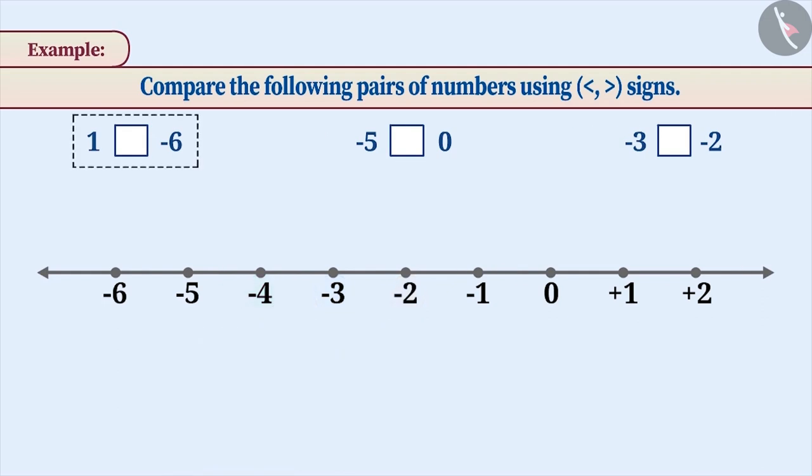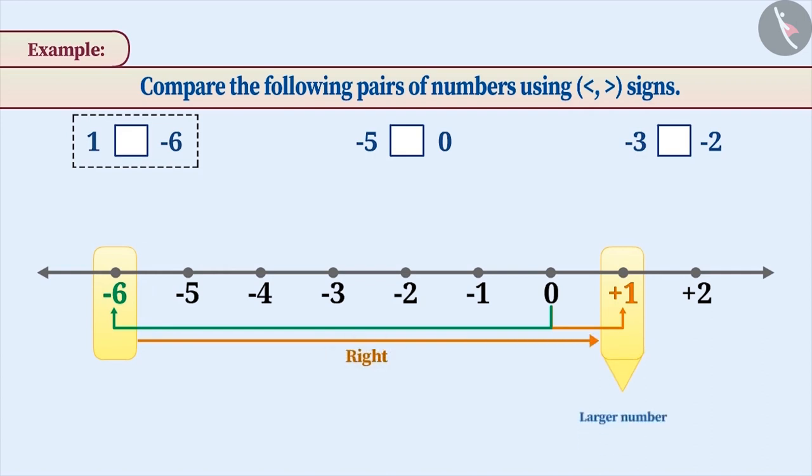Now, let's compare 1 and minus 6. In order to do this, we will represent them on a number line. The number plus 1 is marked 1 place to the right side of 0 and minus 6 is marked 6 places to the left of 0. As you can see, the number 1 is to the right side of minus 6. Therefore, 1 is the larger number and minus 6 is the smaller number. Remember that the face of the sign is always towards the larger number.